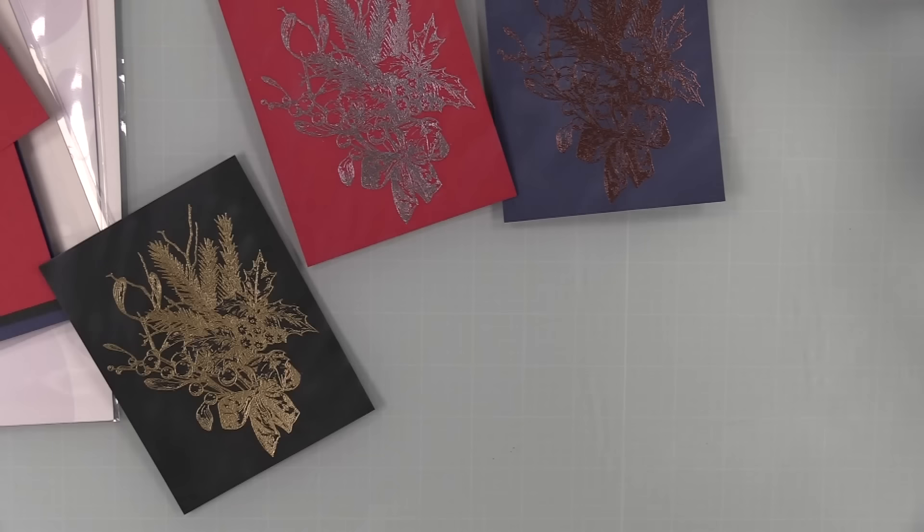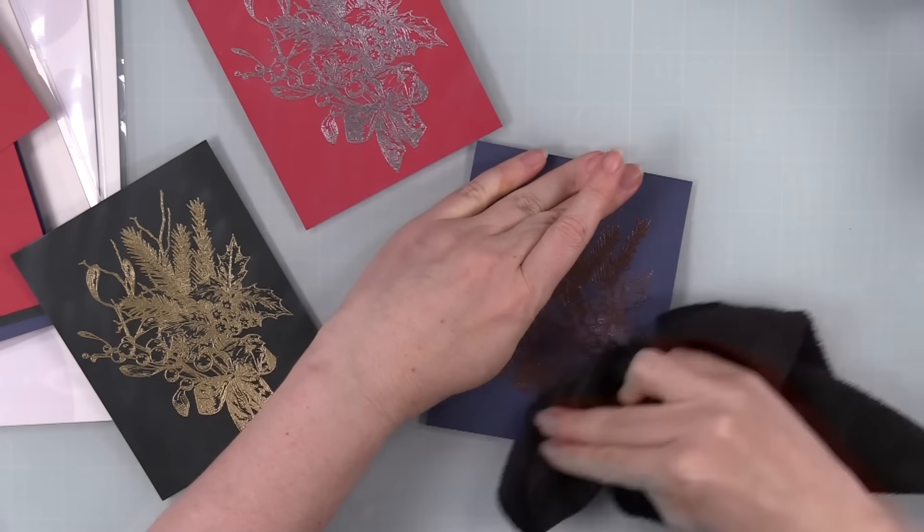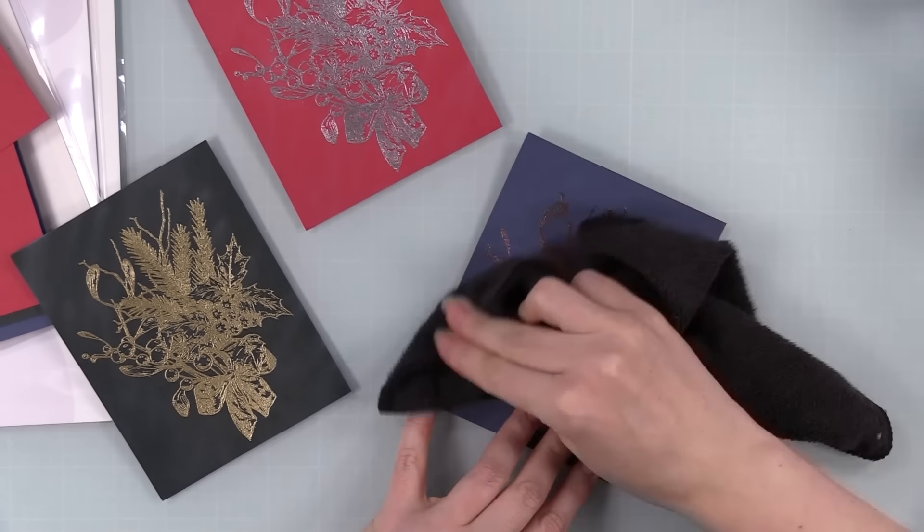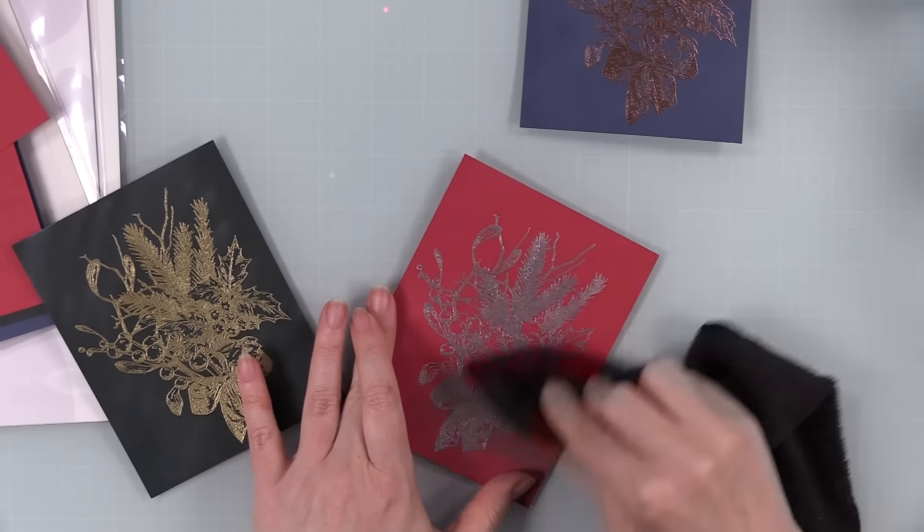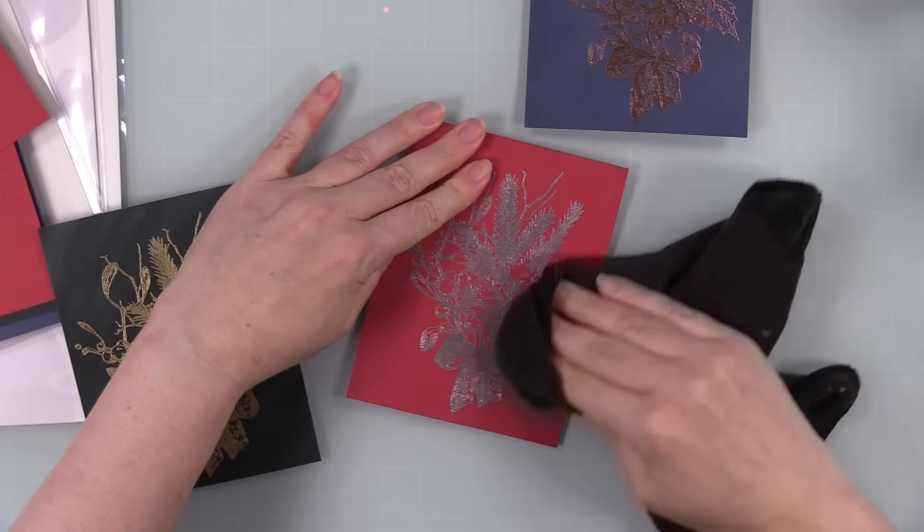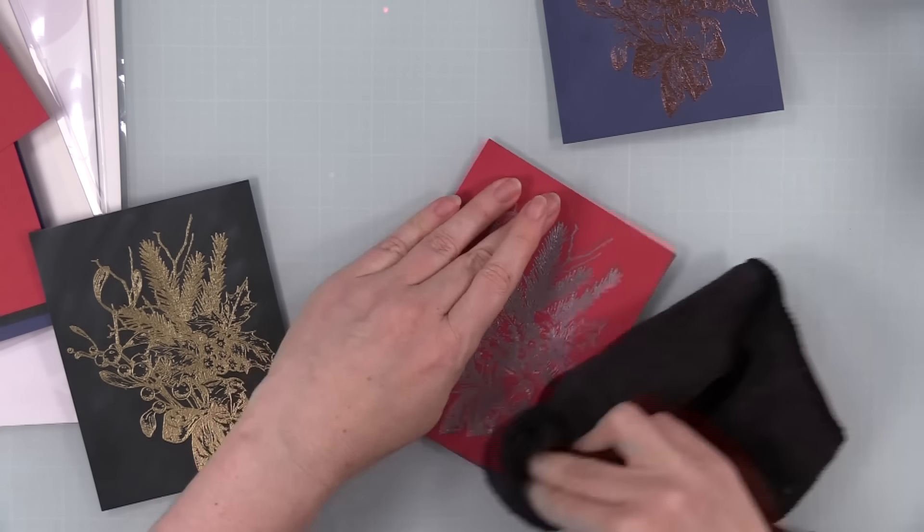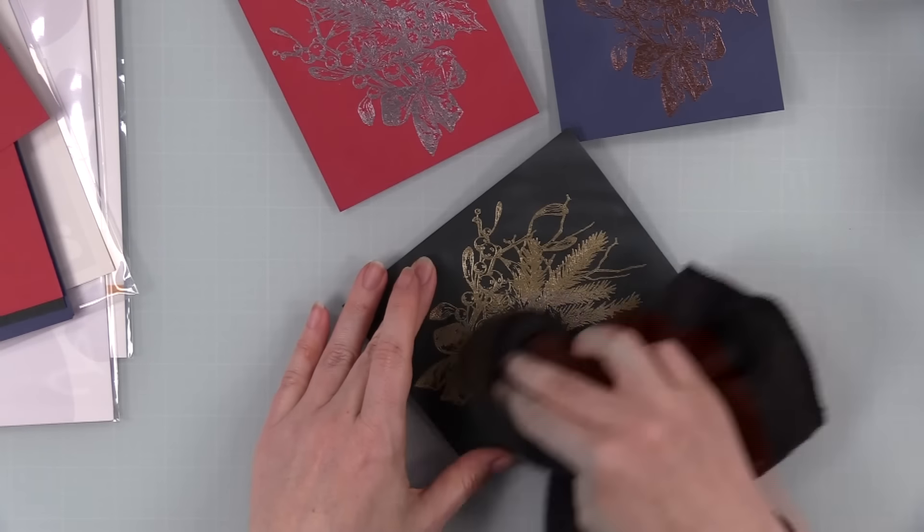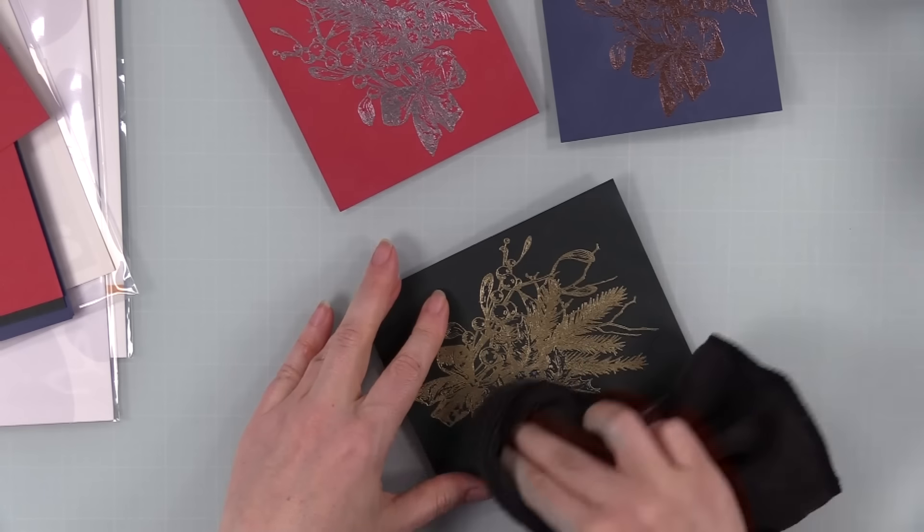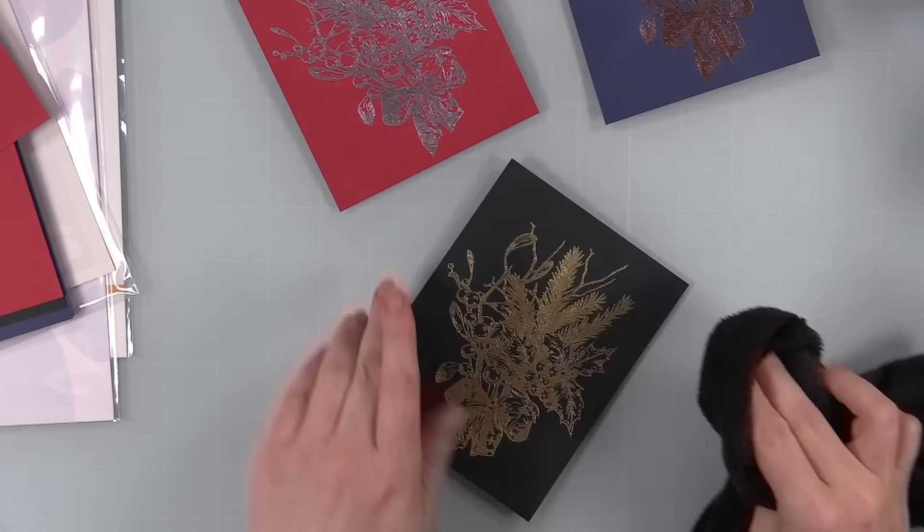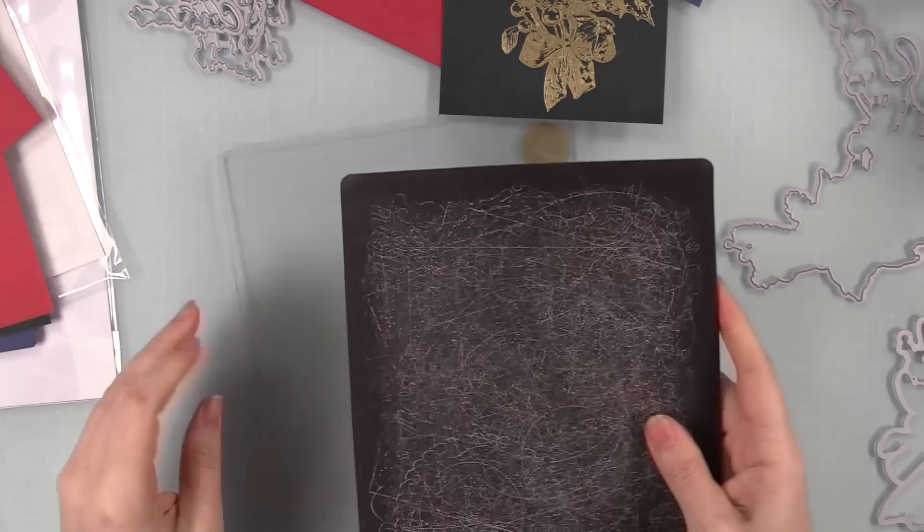Once I was done all my embossing, I used my microfiber cloth to buff away that excess anti-static powder because on dark card stock it likes to cling around and be annoying. So a little bit of elbow grease and just buffing it away so that it's not making everything look weird.